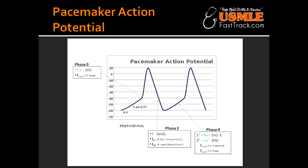What is phase 0 of the pacemaker action potential? Phase 0 is the upstroke when the opening of the voltage-gated calcium channel happens. A few things to note: fast voltage-gated sodium channels are permanently inactivated because of the less negative resting voltage of these cells. This results in a slow conduction velocity that is used by the AV node to prolong the transmission from the atria to the ventricles.